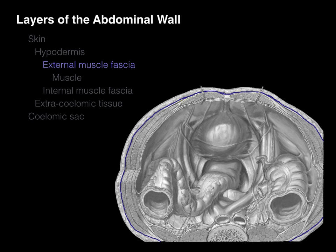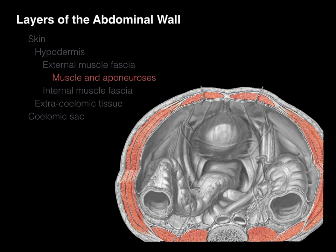The external muscle fascial layer is outlined in blue and circumscribes the entire wall. It's made of dense connective tissue with different names depending on location: at the back it's called the thoracolumbar fascia, on the side it's the fascia surrounding the external oblique muscle, and in the front it blends with the fascia of the rectus sheath. All these anatomical terms belong to the same layer — the external muscle fascia — below the epidermis but superficial to the muscles and their associated aponeuroses.